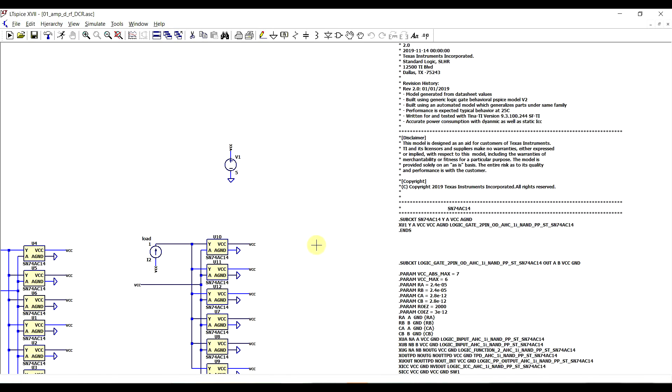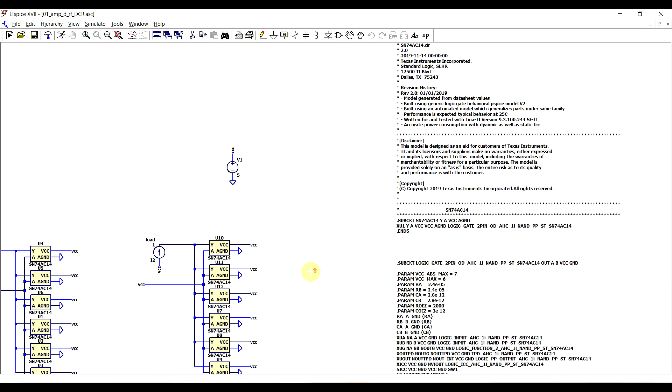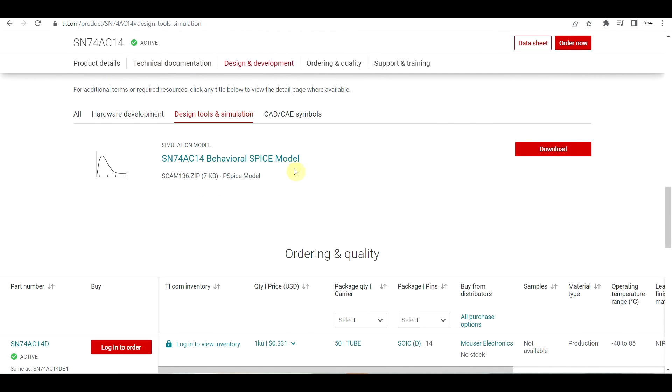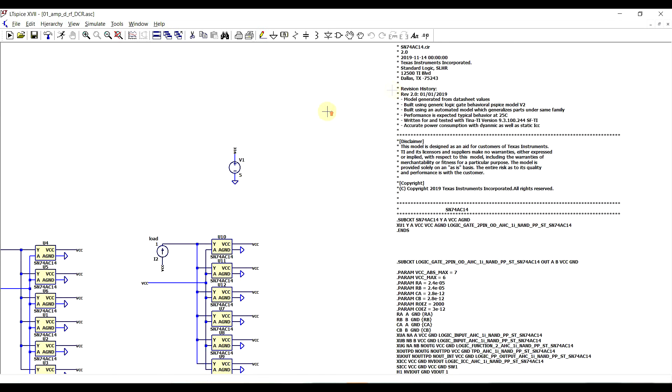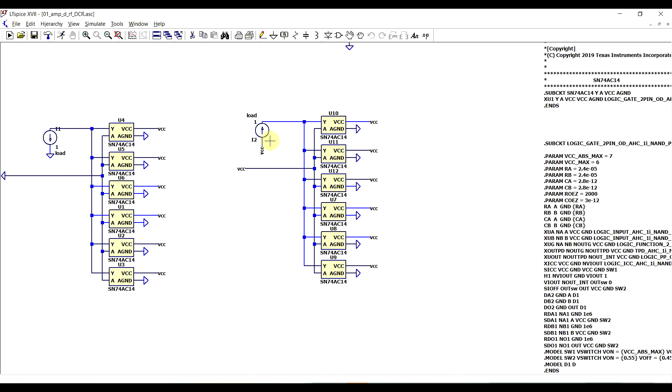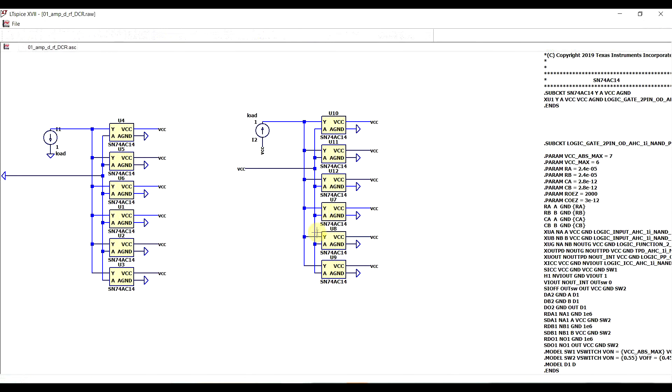Now the datasheet never gave us a typical value for series resistance, only some extremes. So one thing you can do to get a more realistic use case value is to check a simulation model. So I found this on the Texas Instruments website. So for the SN74AC14, here they have a behavioral spice model. And I included this into a simulation where I put 6 gates in parallel, driving a constant current load, either on the high side or on the low side, just to see what sort of voltage drop occurs on the gate in reference to the supply voltage. So if we run this simulation, our supply voltage is at 5 volts.